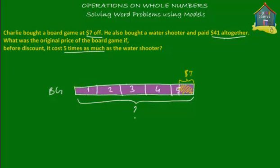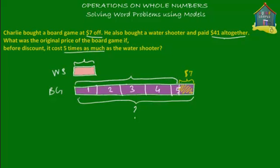If five units is how much the board game cost, then the water shooter cost only one unit, colored pink. Charlie paid $41 altogether for the water shooter and the board game — that's the pink part and the purple part excluding the discount. Including the discount, the cost would be $41 plus $7, which equals $48. So before the discount, the total cost of the water shooter and the board game was $48.